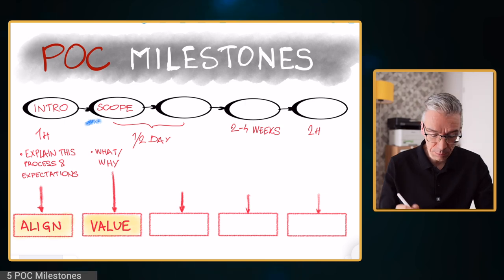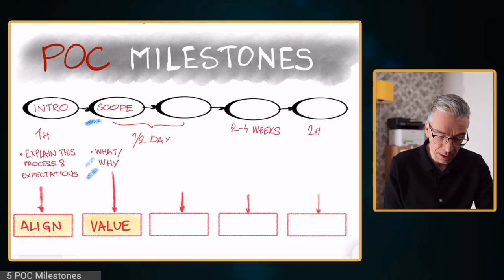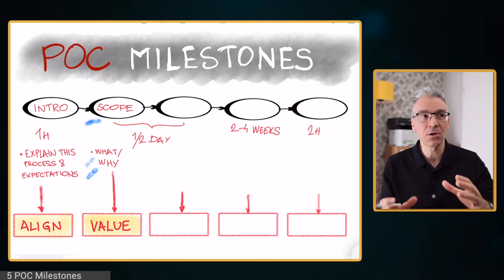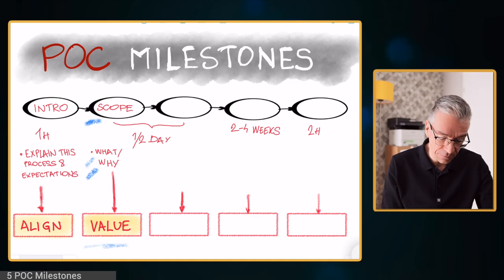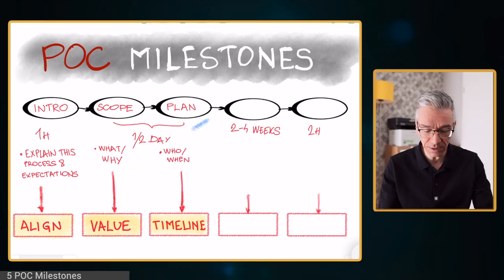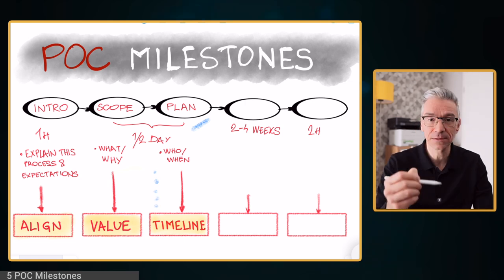For the scoping, it's really important that we determine what and why — what we are doing and why we are doing it — with the aim that we are all aligned at the end on the value we want to deliver. The second part of that workshop is to do the actual project planning. We want to nail down who exactly and when they are going to deliver, task by task — really nail it down to details. You want to know who is responsible for what, with tasks, owner, delivery date, and preferably a status field so you can track it as the POC progresses.